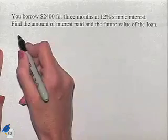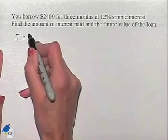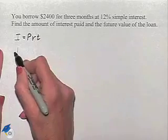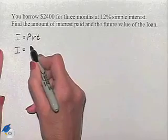To find the amount of interest paid, we're going to use the formula I equals P times R times T. In this problem, our principal is going to be $2,400.